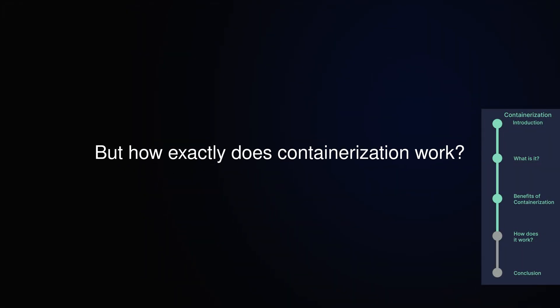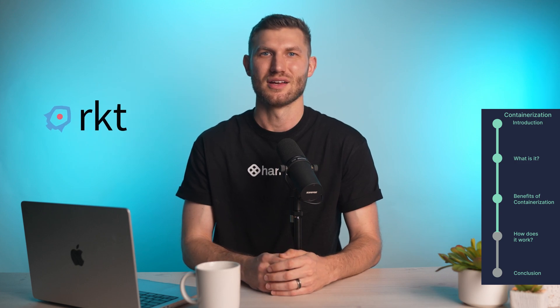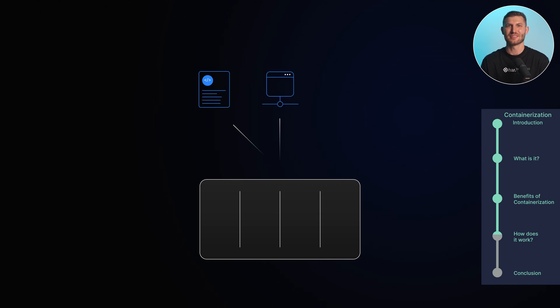But how exactly does containerization work? Let's explore the underlying mechanisms. Containers are created and managed using container engines such as Docker or Rocket. These engines leverage operating system-level virtualization to isolate containers from each other and the underlying host. When a container is created, it is based on a container image — a lightweight, standalone package that contains all the necessary files and dependencies for running an application. Containers run in their own isolated environments, separate from other containers and the host system. Each container has its own file system, network interfaces, and process space, ensuring isolation and security.